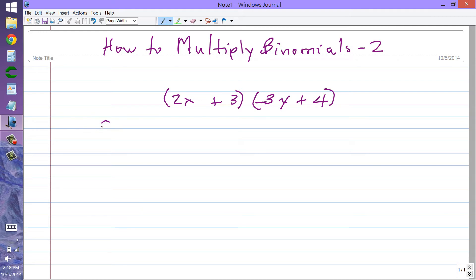Let's go ahead and work that out step by step. 2x times minus 3x will give us minus 6x squared.